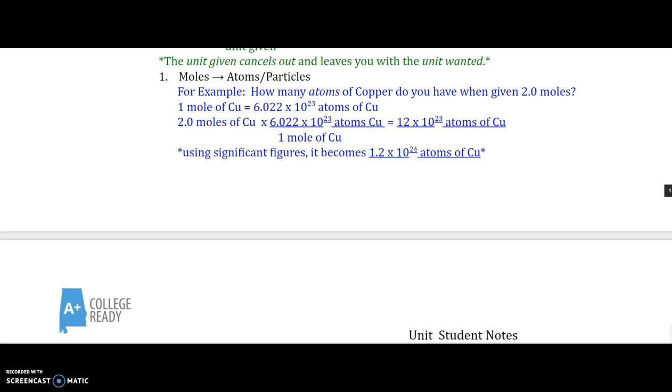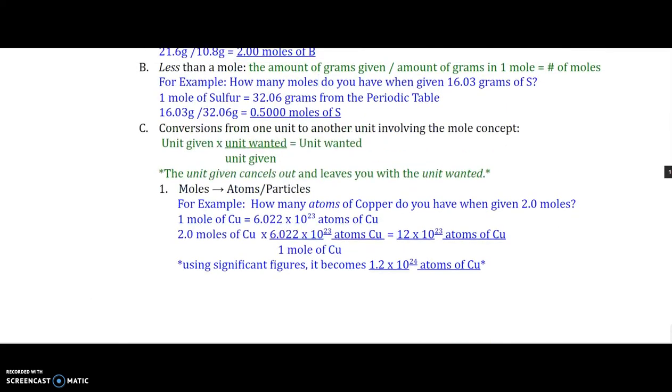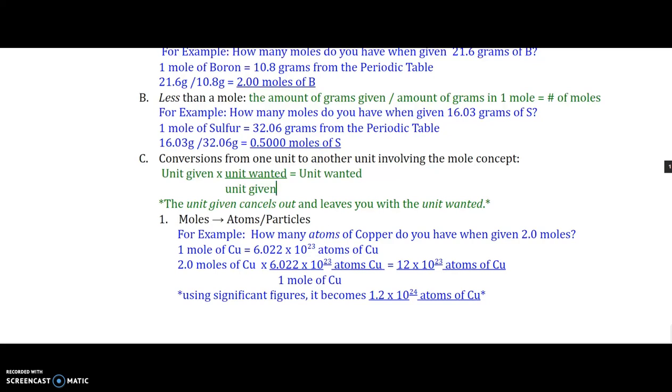The question asks, how many atoms of copper do you have when you're given two moles? I know for every one mole of copper, it equals Avogadro's number of atoms of copper. So, I will take my given value of the 2.0 moles of copper. I will multiply that by Avogadro's number because that's my ratio, Avogadro's number, over one mole. Notice my moles will cancel, and I'm left with 12 to the power of 23 atoms of copper. However, if we're using significant figures, we need to convert that to where we have the decimal moved one place so that I have 1.2 to the power of 24 atoms of copper because my given value had two significant figures.